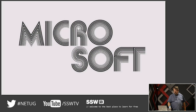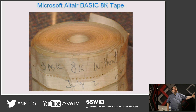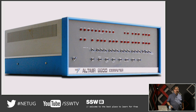Let's jump forward to the beginning of Microsoft — this terrible, terrible logo. This is actually out of the Computer Museum in Northern California. It's one of the original BASICs that Bill Gates and Paul Allen created on paper tape for the Altair 8800. This is the beginning of Microsoft. Microsoft's first products were programming languages — that's where they really came from.